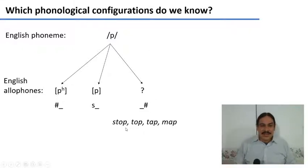All right, so we have the sounds stop, top, tap, and map, which are the environment where you find P before a word edge, before the end of a word. So what sound goes here?